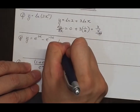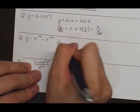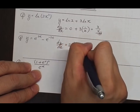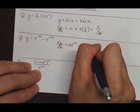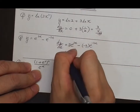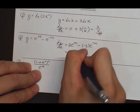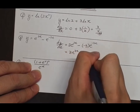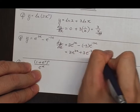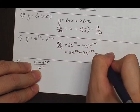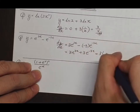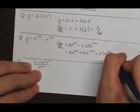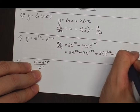Part g: dy/dx equals 3·e to the 3x minus (minus 3·e to the minus 3x), so it equals 3·e to the 3x plus 3·e to the minus 3x. Taking common factor 3 out, we get 3 multiplied by (e to the 3x plus e to the minus 3x).